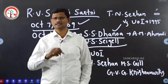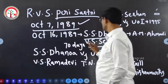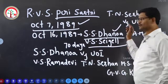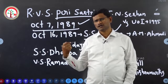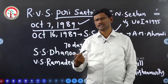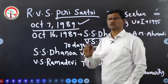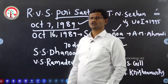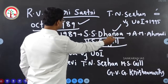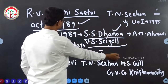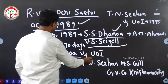As a result, S.S. Dhanoa and Seigell were removed as the Central Election Commissioners. One of these two Central Election Commissioners, S.S. Dhanoa, went to the Supreme Court and filed a case. This case is known as S.S. Dhanoa versus Union of India.